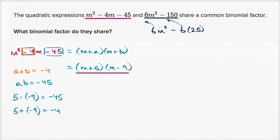You can view this as undistributing the six. So this is the same thing as six times m squared minus 25, which we recognize this is a difference of squares. So it's all going to be six times m plus five times m minus five. And so we've factored this out as a product of binomials and a constant factor, six.